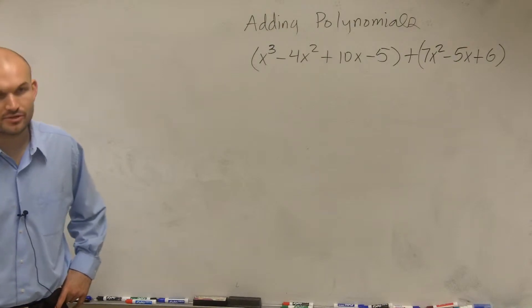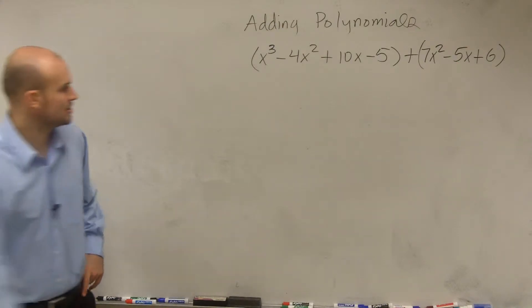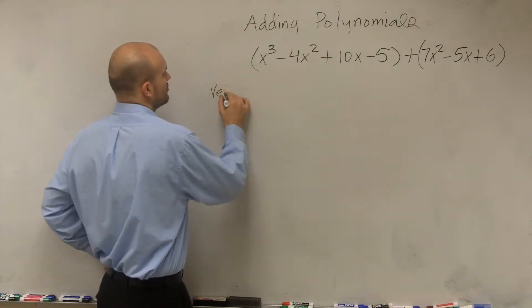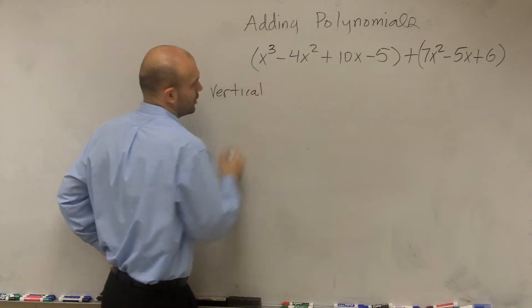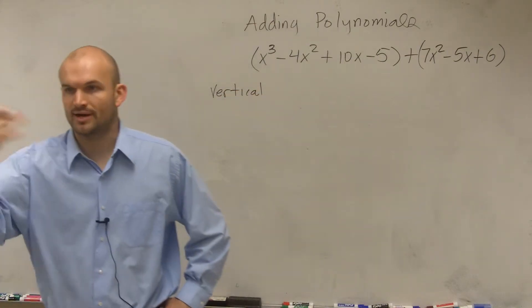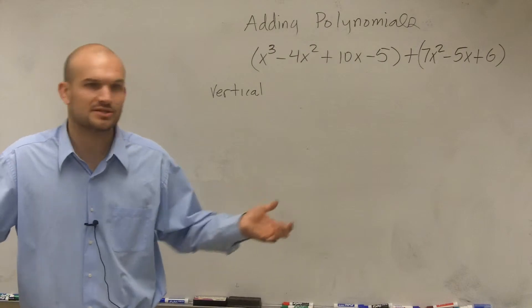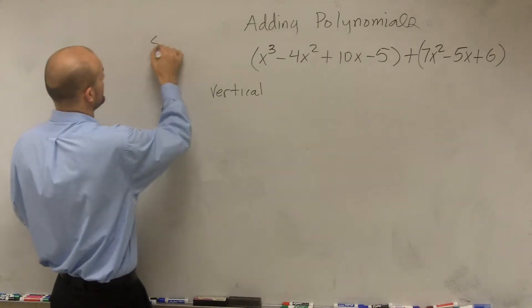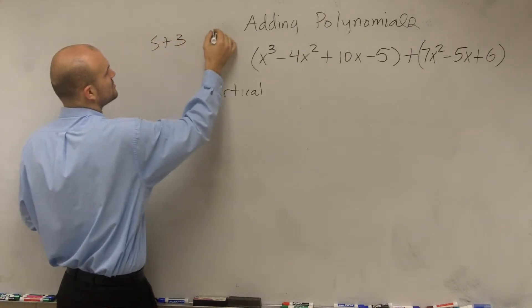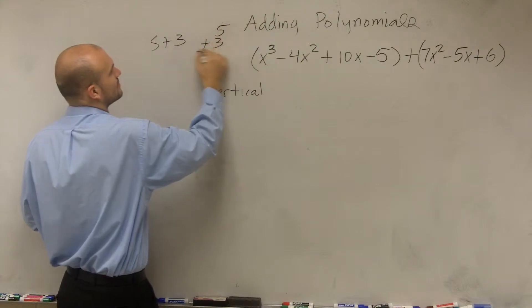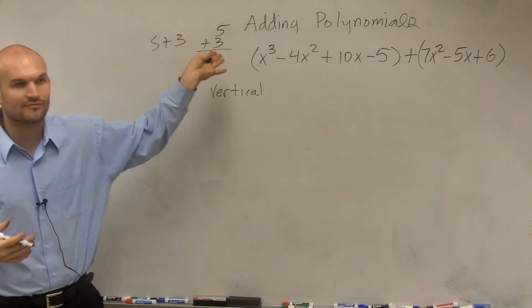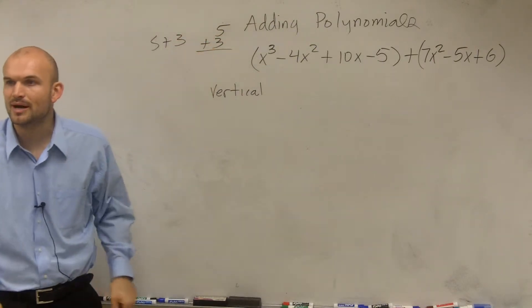Now, there's a couple ways we can do this. The first way I'm going to show you is what we call the vertical method. All you're going to do when adding is write one above the other. Remember when I said like 5 plus 3? Sometimes teachers say, why don't you write it like this? This is the vertical method. You're going to do the same thing with polynomials, write one above the other.